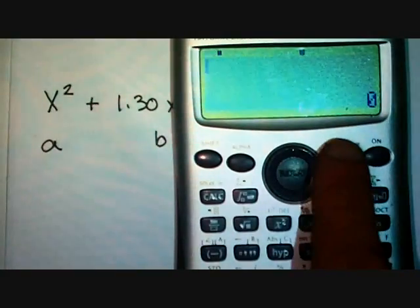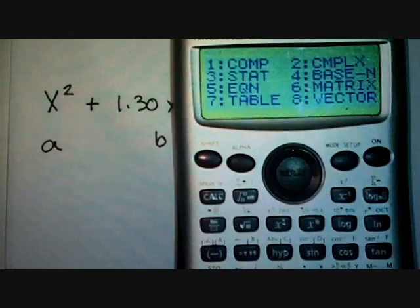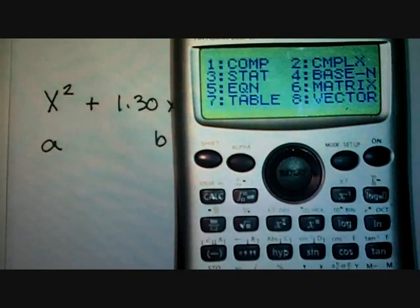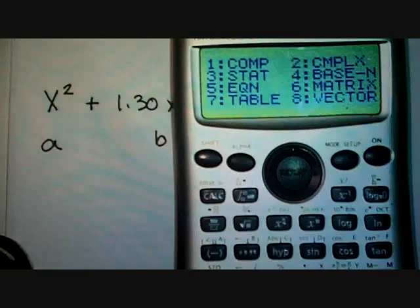So you'll click on the button that says Mode Setup. Then click number 5 for equation.